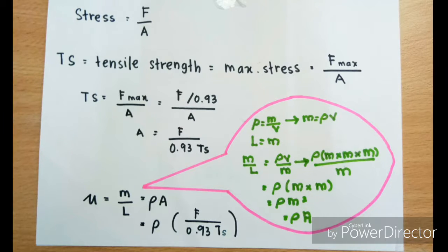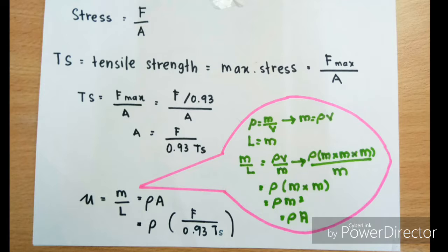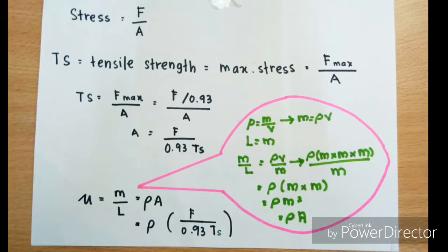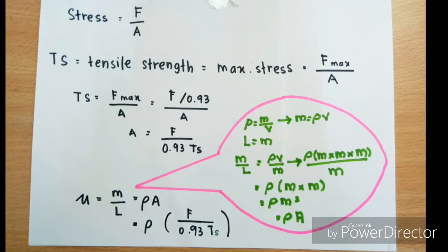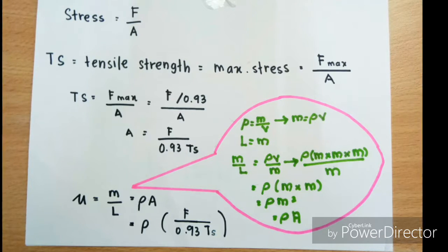Tensile strength is equal to max stress, which is force maximum over area. TS is force max over area, and we get 0.93 from the question given. So we will get area is equal to force over 0.93 tensile strength.